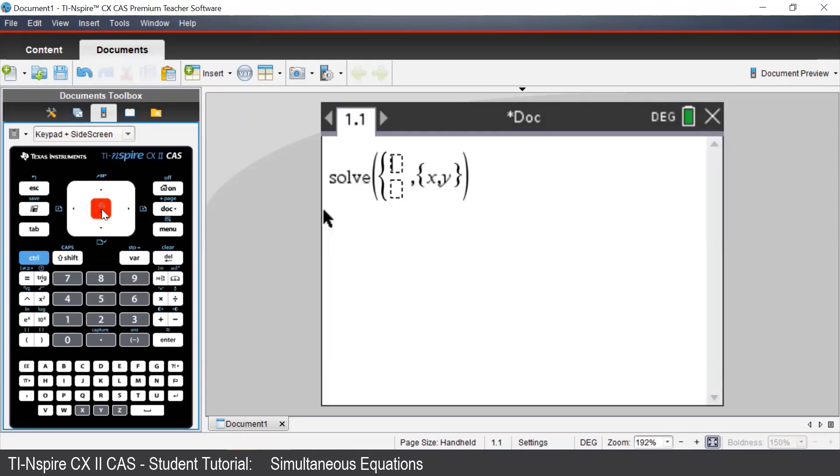Once you press OK, we can enter in our first equation, 2x plus 3y equal to 14.